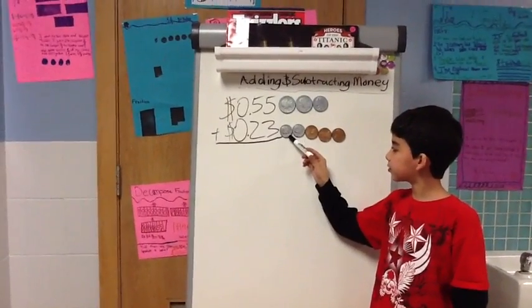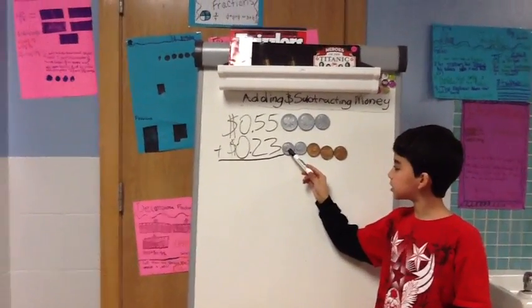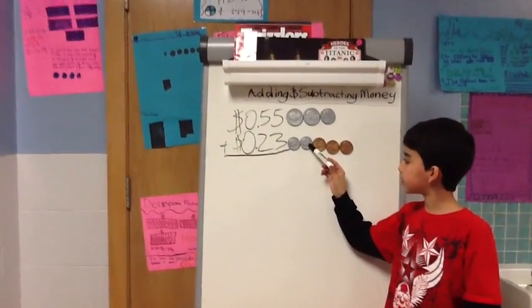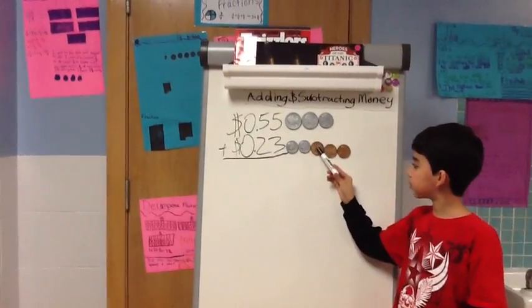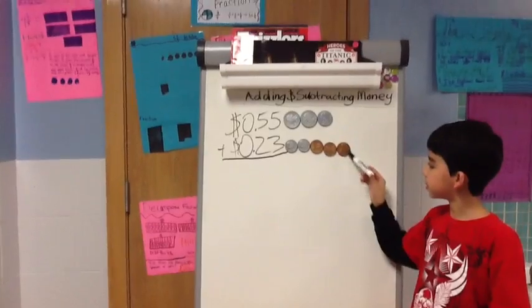And here's our model for 22 cents. A dime is 10, another dime is 20, then 21, 22, and 23.